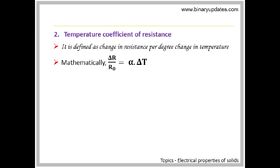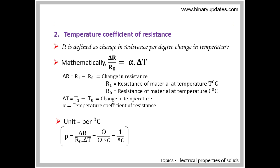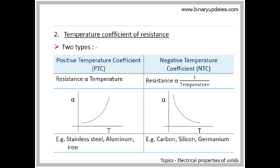By definition, it is the change in resistance per degree change in temperature. It is denoted as alpha. Mathematically, it is expressed as shown. The unit of temperature coefficient of resistance is per degree Celsius. The temperature coefficient of resistance can be positive or negative. In PTC, the resistance is directly proportional to temperature, and in NTC it is inversely proportional.